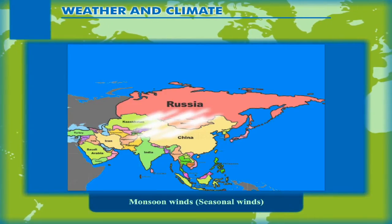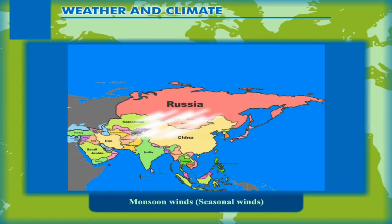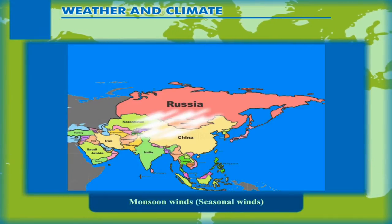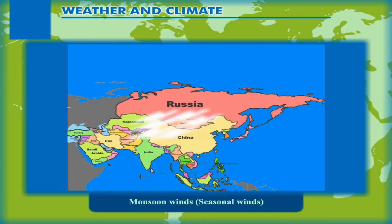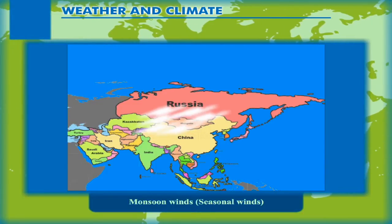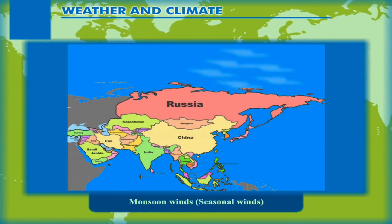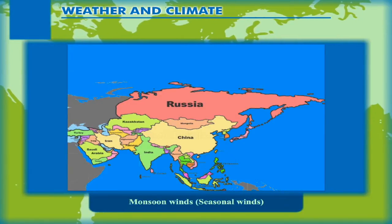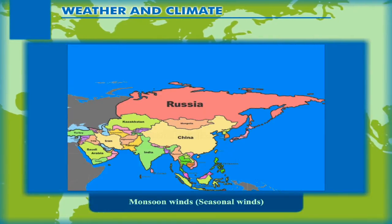During winter season, the landmass becomes cooler and the pressure over Central Asia becomes high. From this high pressure area, the wind blows towards the equatorial low pressure area in a northeast direction. These are known as winter monsoons or retreating monsoon.